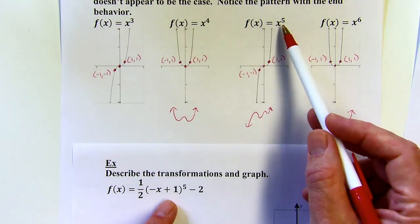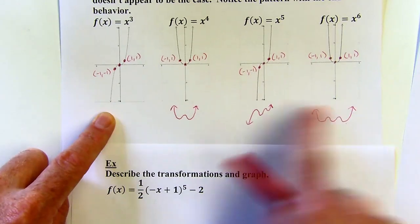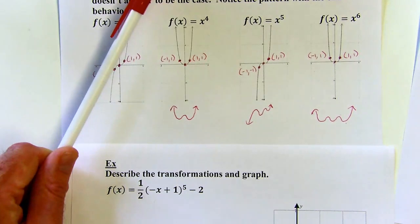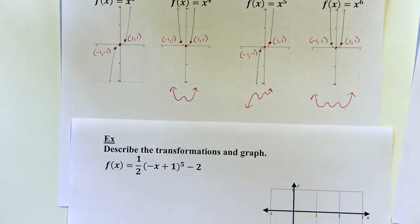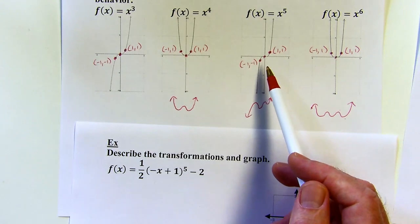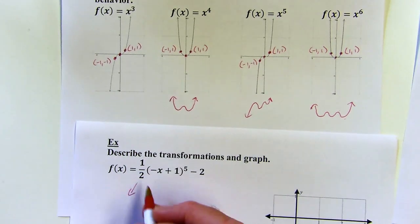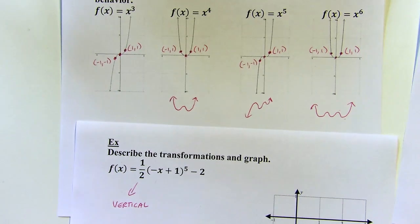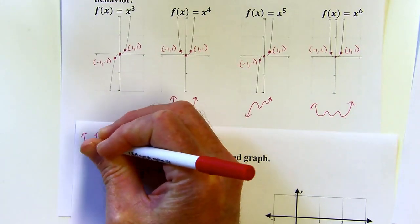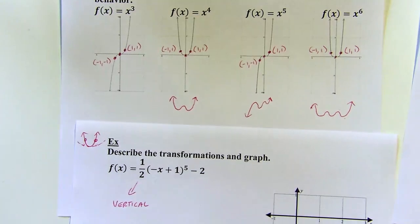This is a fifth degree function. The one-half is outside — it's not touching the x — so that means we're going to have a vertical change. Thinking back to parabolas, that'd be a wider parabola with a vertical change, meaning I can only move those points up or down. If I want this to get wider, I'd have to move them down. So that's going to be a vertical compression.